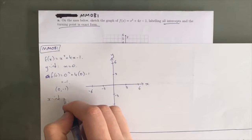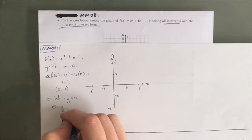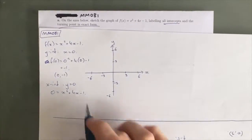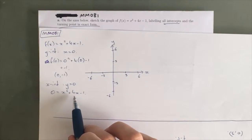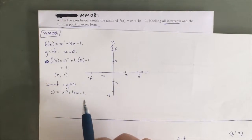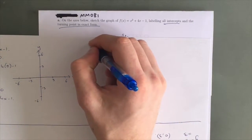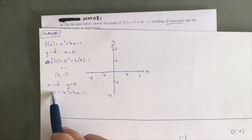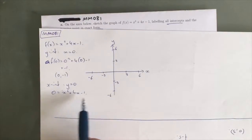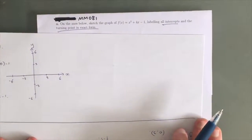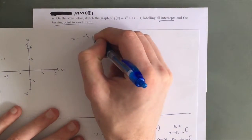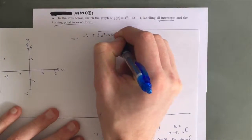Our x-intercept occurs when y equals 0, so we have 0 equals x squared plus 4x take 1. Because this is a quadratic, we're going to have to factorize this in some way or use the quadratic formula. I'm going to go with the quadratic formula. To use it, you have to have a quadratic with a 0 on one side, and the quadratic formula is x equals negative b plus minus square root of b squared take 4ac, all over 2a.